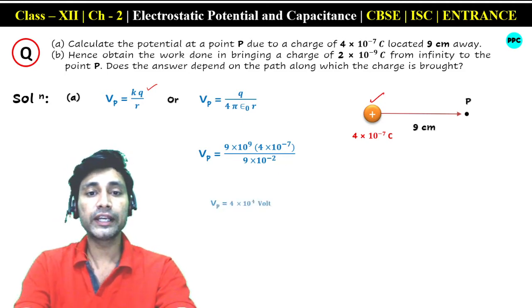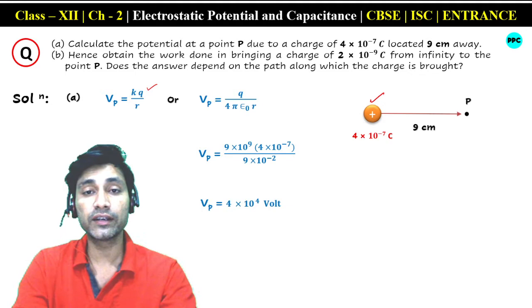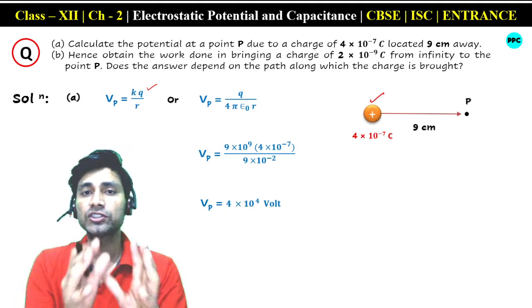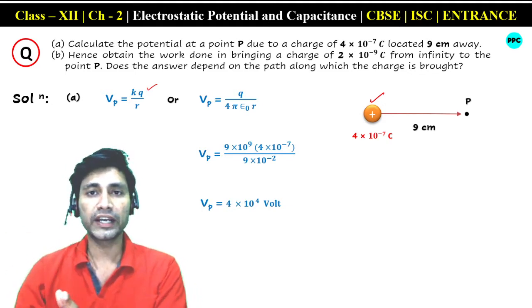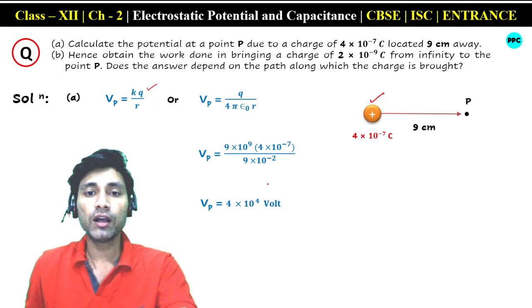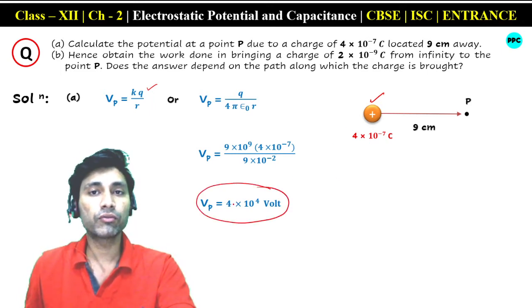The value of potential we get is 4 × 10⁴ volt. That is, at point P which is 9 cm away from this charge, the potential will be 4 × 10⁴ volt.